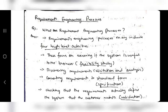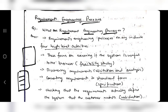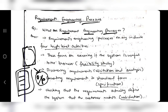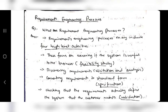The requirements engineering process: for any product you need a document listing all requirements the product should contain and its expected outputs. That document is the requirements engineering document. The process of writing it is known as the requirements engineering process, and it has four steps: feasibility study, elicitation and analysis, specification, and validation.